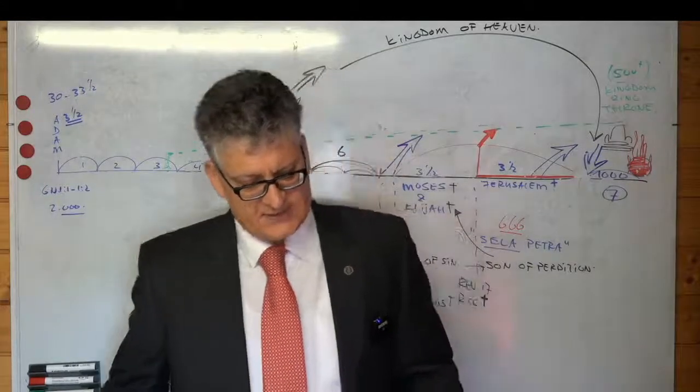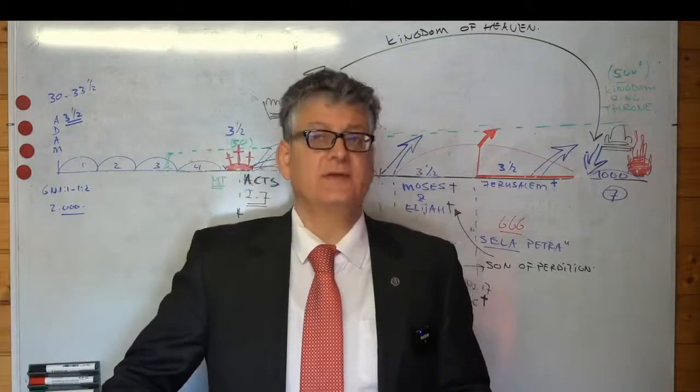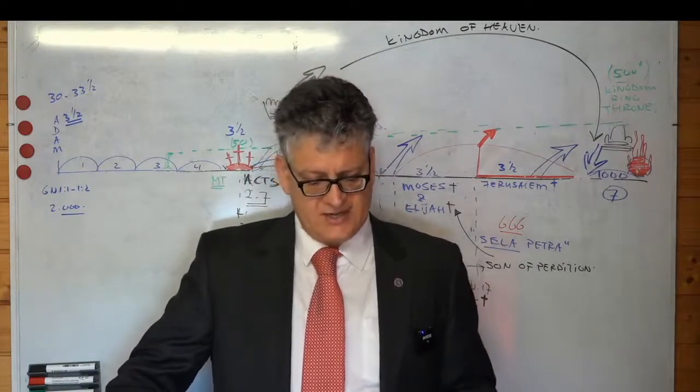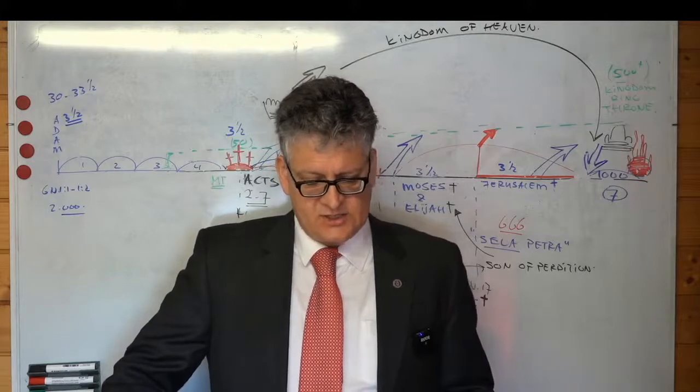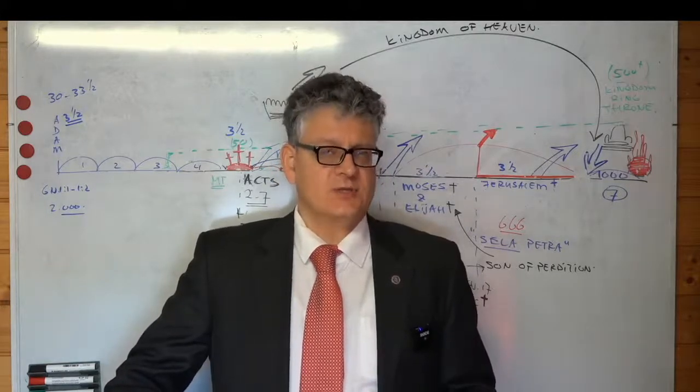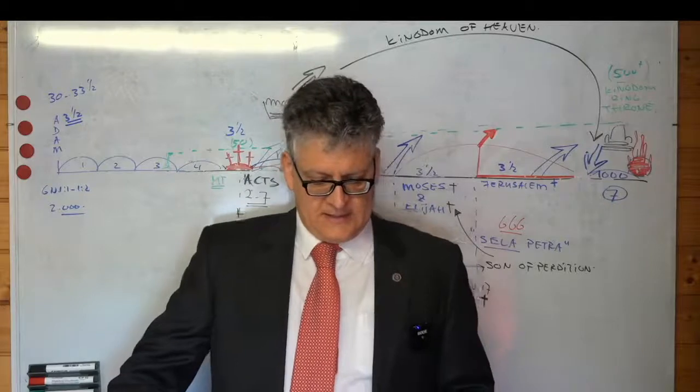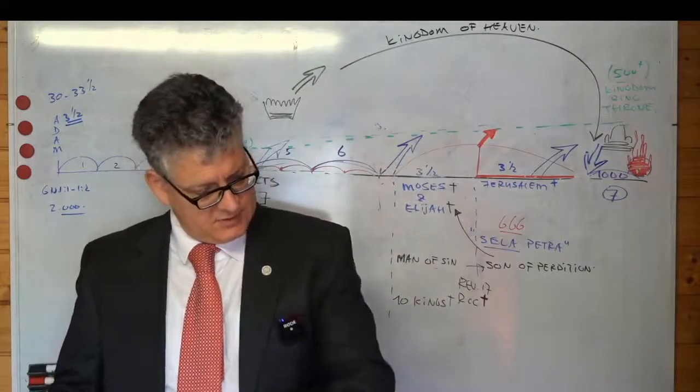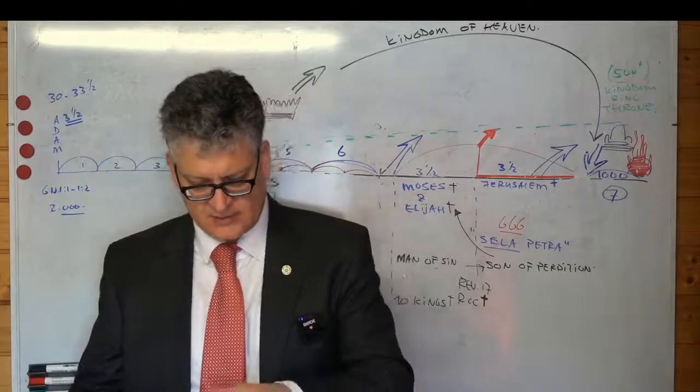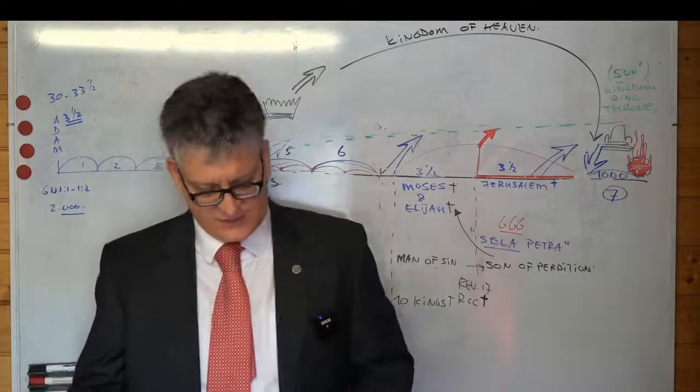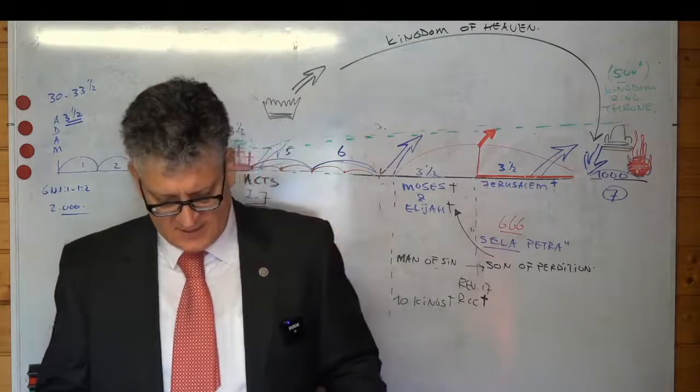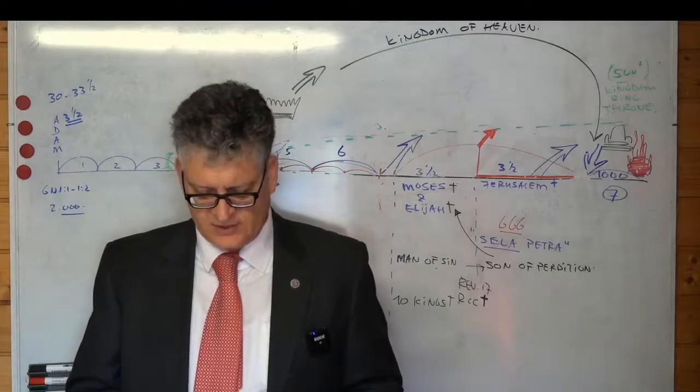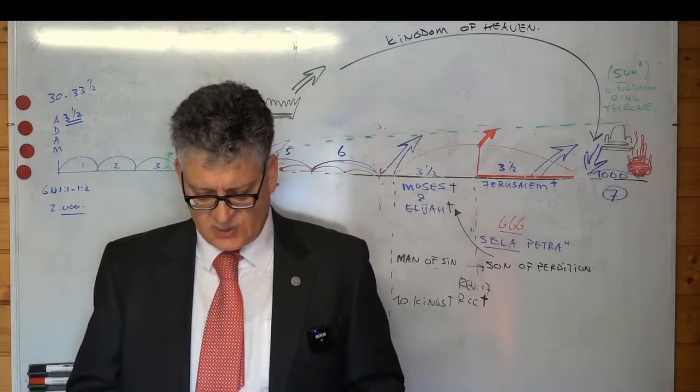We see in Acts chapter 8 a eunuch comes from Ethiopia to the temple to worship the God of the Jews and reads Isaiah. The Gentiles come to Jerusalem in the millennial reign to worship the God of the Jews. Look at Isaiah chapter 11, verse 10. In that day there shall be a root of Jesse which shall stand for an ensign of the people, and to it shall the Gentiles seek, and its rest shall be glorious.